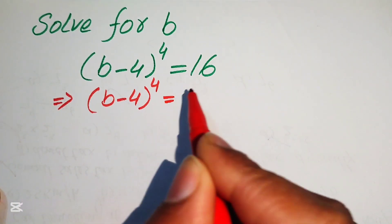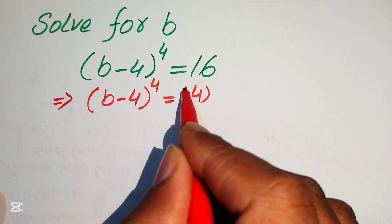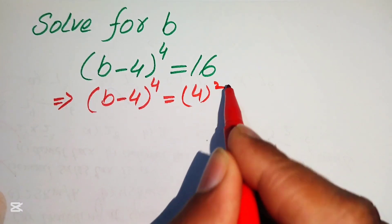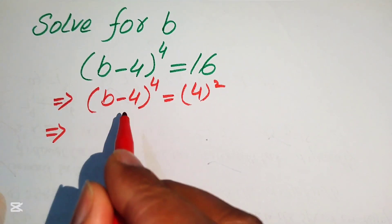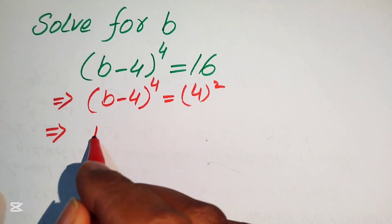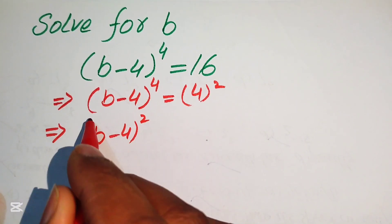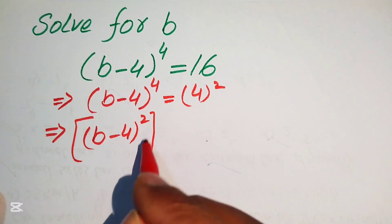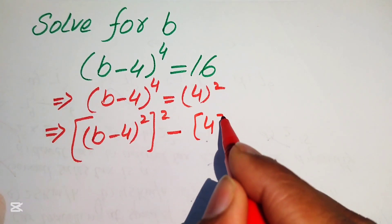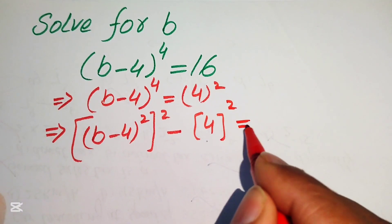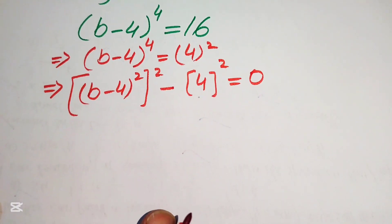We write 16 as 4 squared. After that we move this 4 squared to the left hand side and rewrite the left hand side as (b minus 4) squared, whole squared, minus 4 squared equals 0.